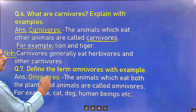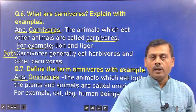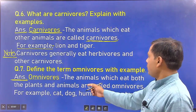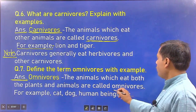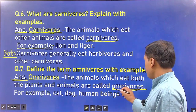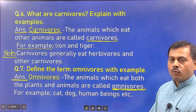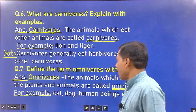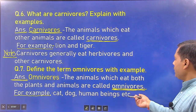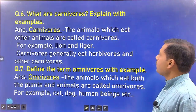Question 7: Define the term omnivores with examples. The animals which eat both plants and animals are called omnivores. The most powerful example of omnivores is human beings — we are omnivores. Other examples include cat, dog, and human beings.